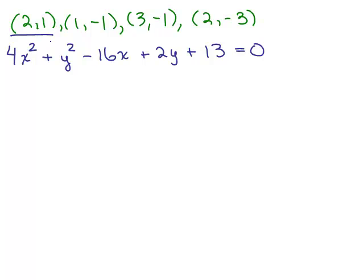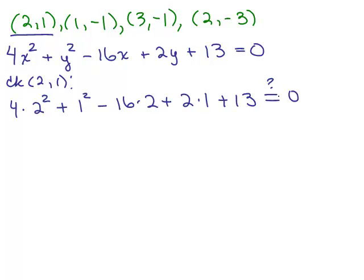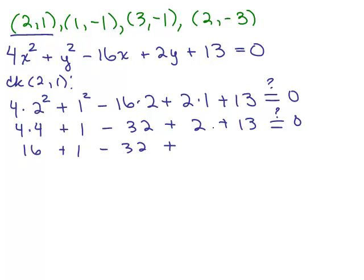Let's check the first ordered pair, 2, 1. I'm going to put in 2 for X and 1 for Y. We have 4 times 2 squared plus 1 squared minus 16 times 2 plus 2 times 1 plus 13. Does that equal 0? So we have 4 times 4 plus 1, minus 32, plus 2, plus 13 equals 0. We have 16 plus 1 minus 32, and 2 and 13 is 15. Yes, that does equal 0 because 16 plus 1 plus 15 is 32. So it checks.